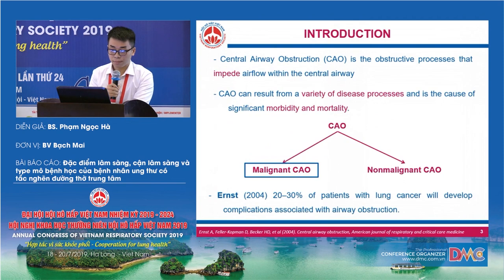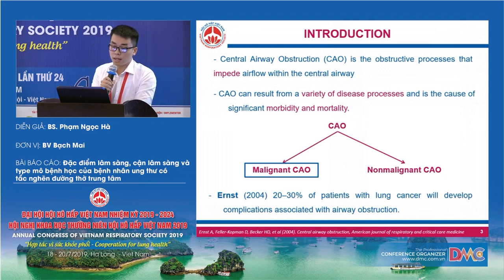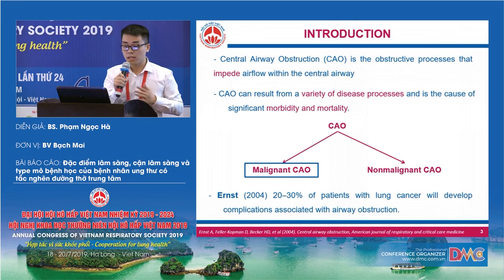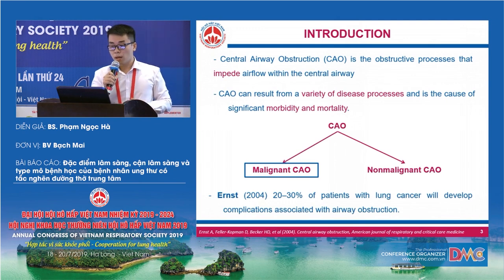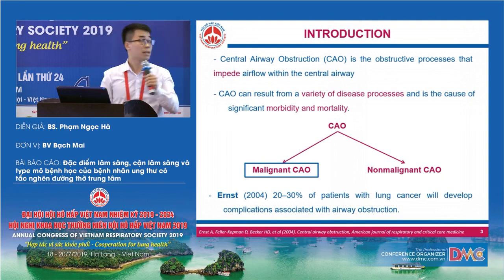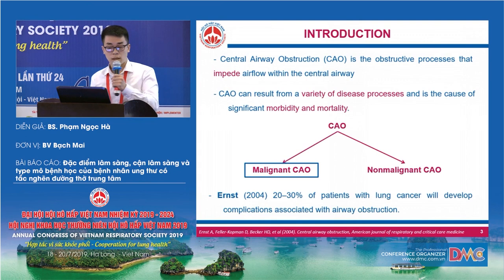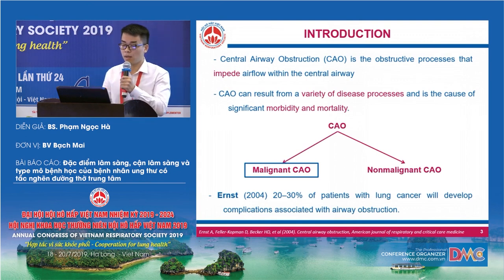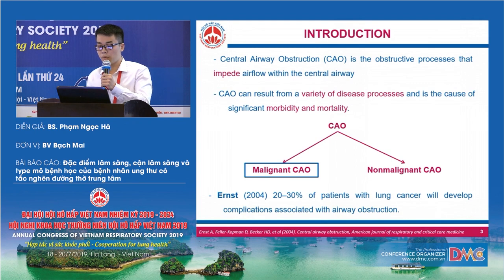There are five parts in my presentation. The first part is introduction. Central airway obstruction is an obstructive process that can impede airflow within the central airway. CAO can result from a variety of disease processes and is a cause of significant morbidity and mortality. According to one study, an estimated 20 to 30 percent of patients with lung cancer will develop airway obstruction, and up to 40 percent of lung cancer deaths may be attributed to local regional disease.